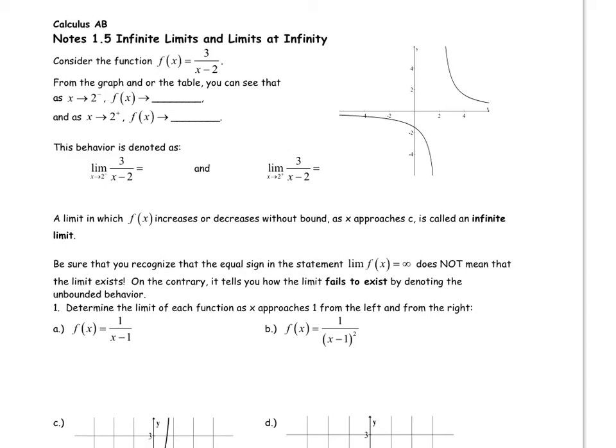All right, so this is the video for the 1.5 notes on infinite limits and limits at infinity. First we're going to look at this function, f of x equals 3 over x minus 2, and we know that this function has a vertical asymptote at x equals 2.